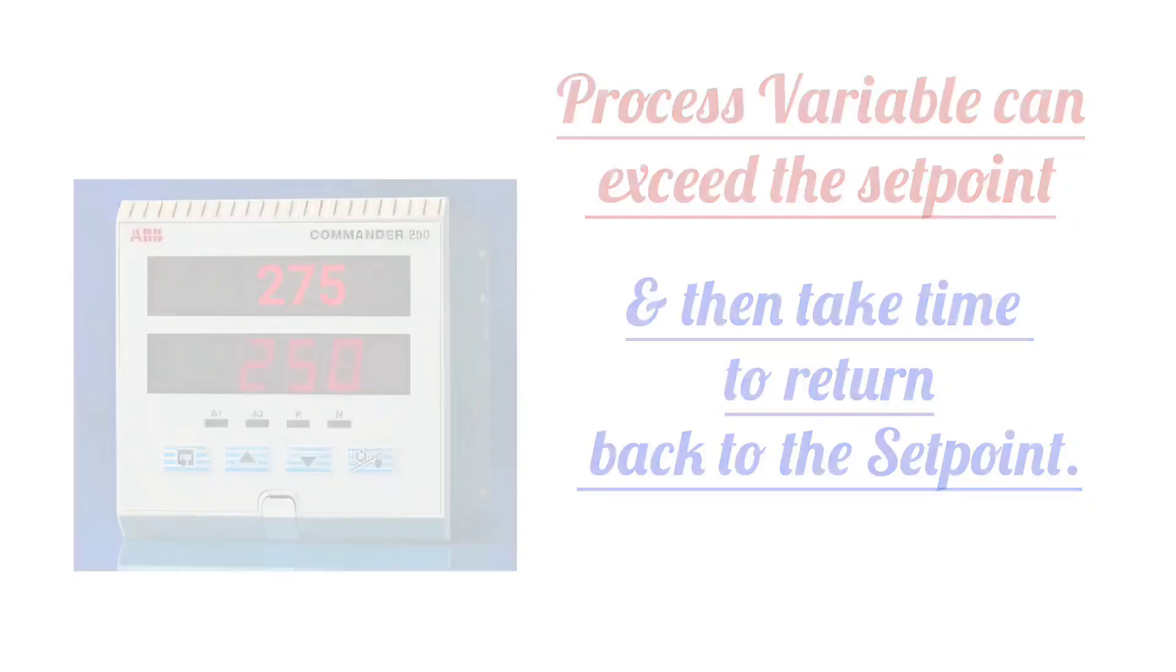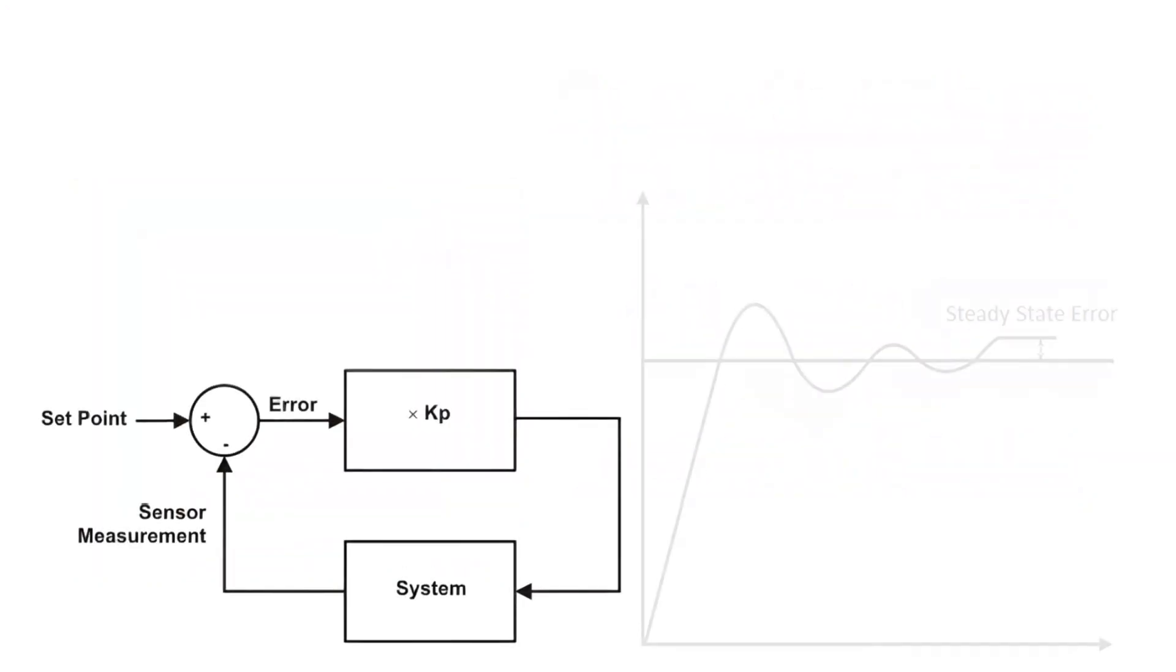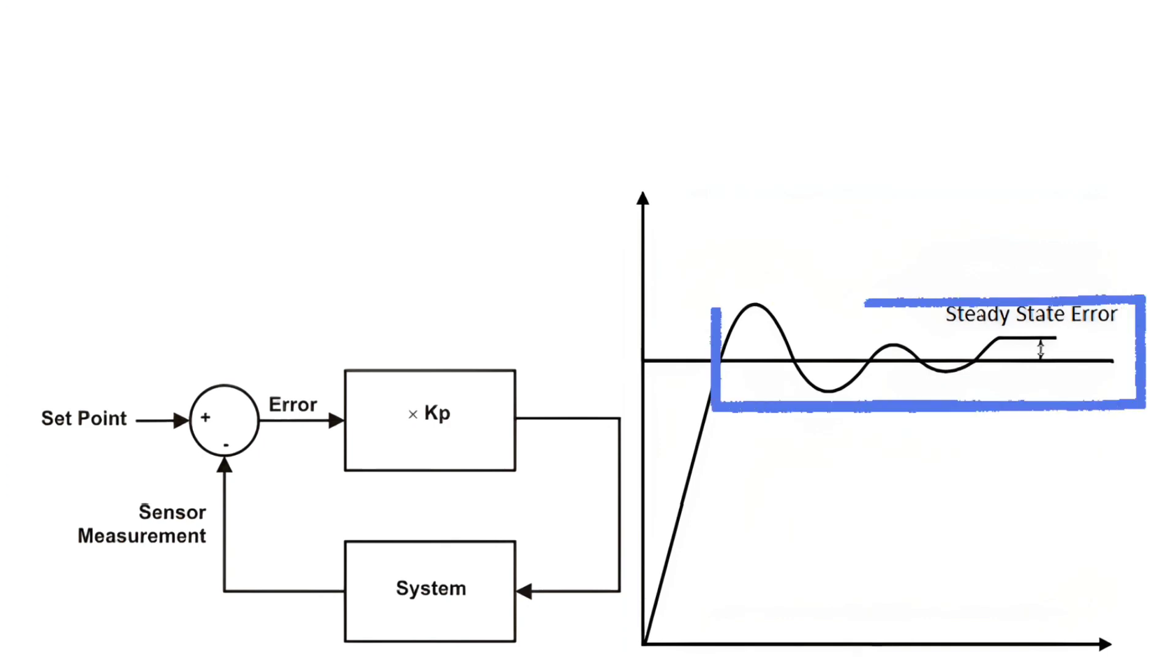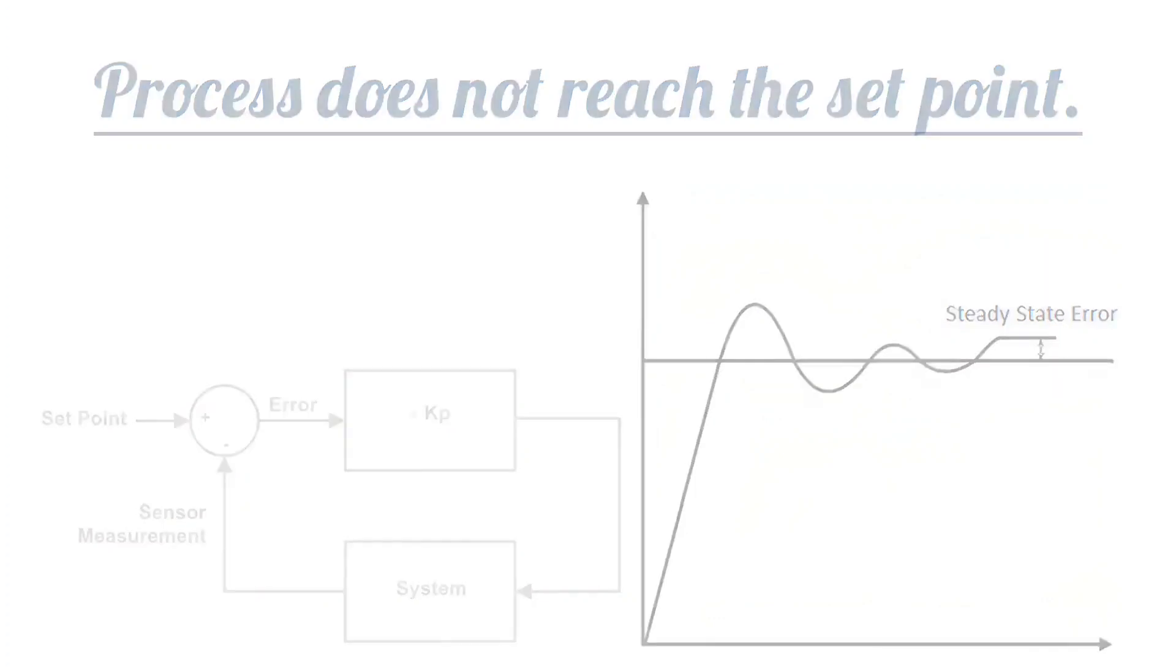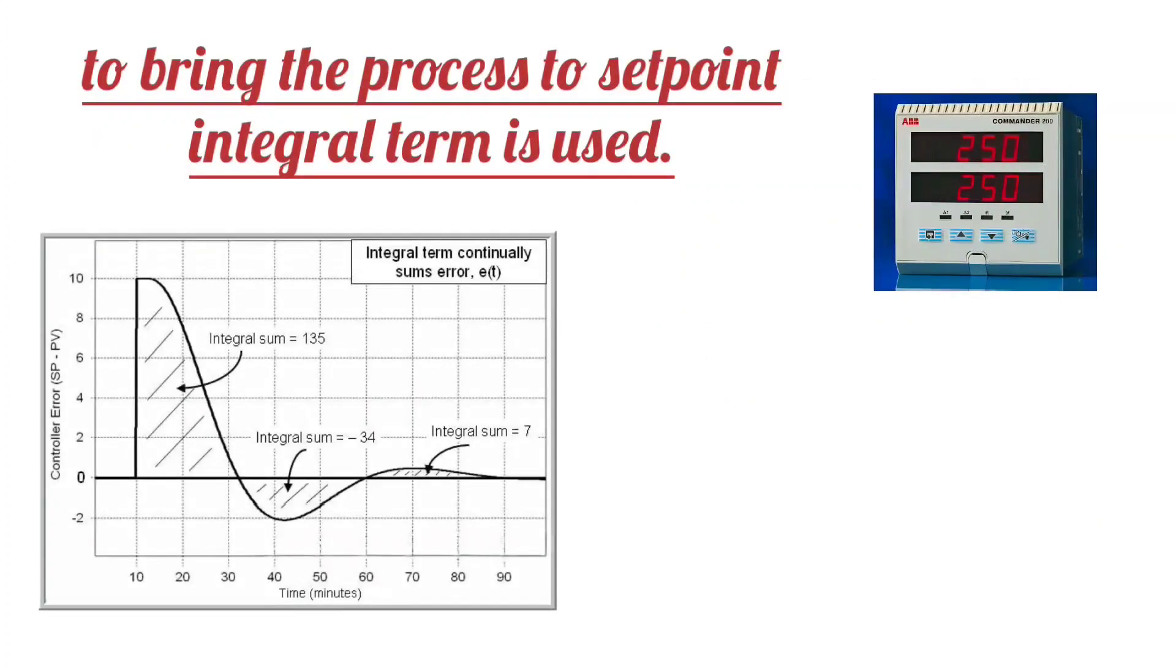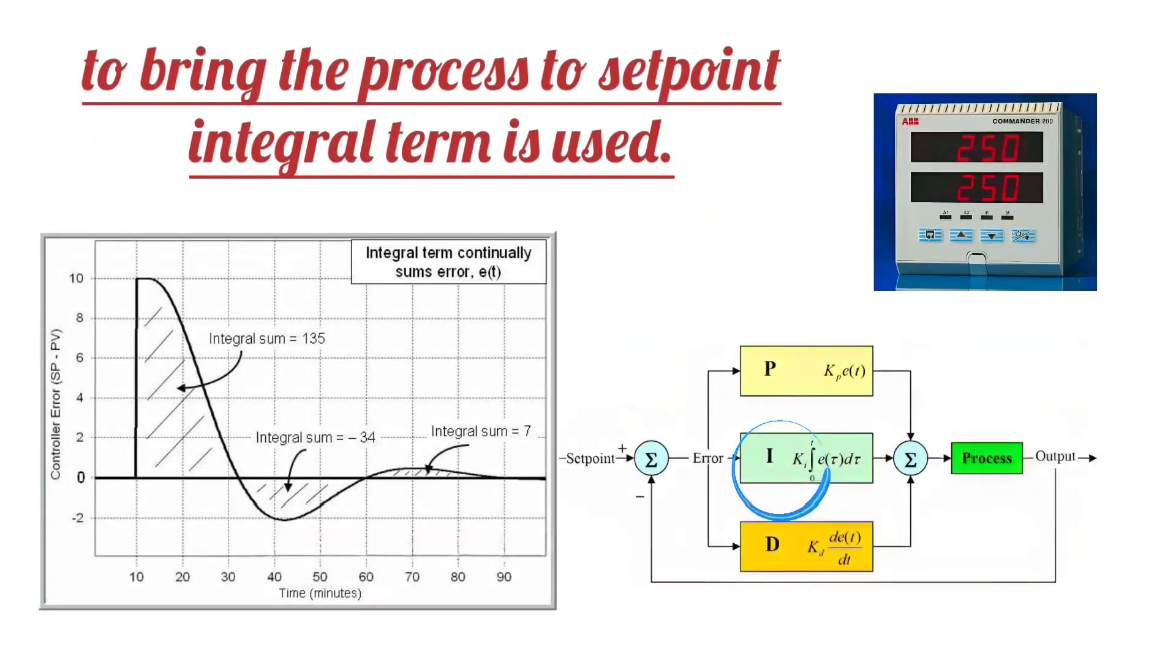Friends, a steady state error remains due to the value of Kp. Process does not reach the set point. To bring the process to set point, integral term is used, or integral control is used.